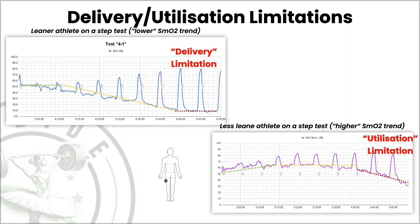So we can't just say that because SMO2 is low at the end of a step test, that athlete needs more delivery training — because they're using all available oxygen in circulation due to that low SMO2 value. On the other side, somebody with higher SMO2 numbers at the end of a test — we can't necessarily say they need to use more oxygen — because of that adipose tissue thickness parameter we need to take into account.